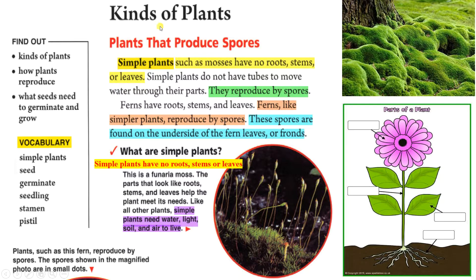Kinds of plants: Plants that produce spores. Simple plants such as mosses have no roots, stems, or leaves. Simple plants do not have tubes to move water through their parts. They reproduce by spores. Ferns have roots, stems, and leaves. Ferns, like simpler plants, reproduce by spores. These spores are found on the underside of the fern leaves, or fronds.